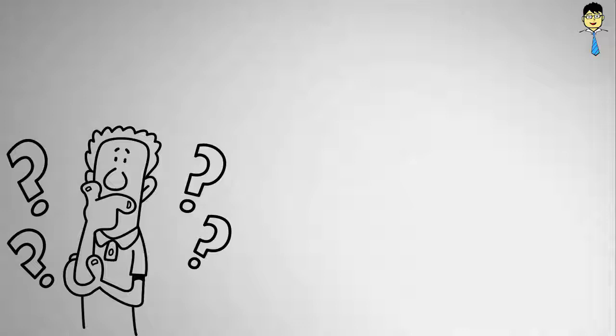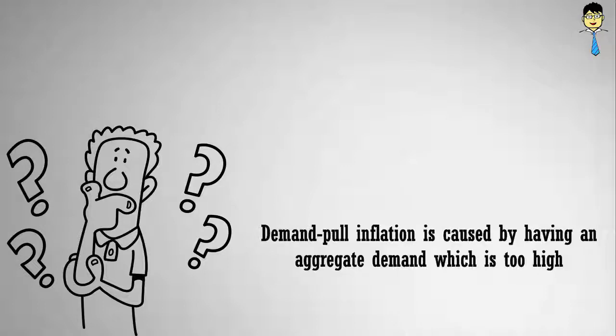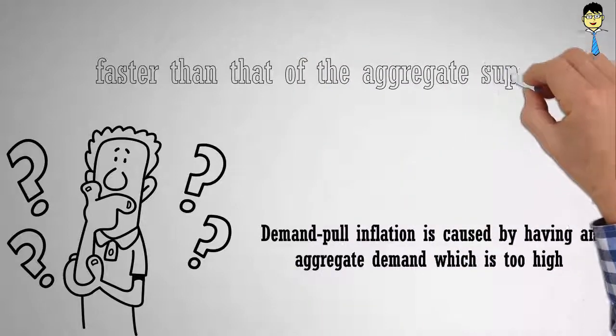Contractionary fiscal policy can be used to reduce demand pull inflation. Demand pull inflation is caused by having an aggregate demand which is too high. This occurs when the increase in aggregate demand is faster than aggregate supply.